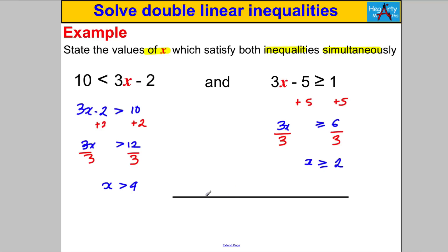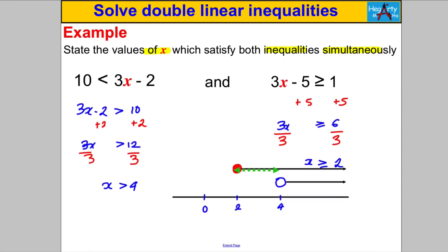Draw a number line with key points at 2 and 4. X > 4 has an open circle at 4 with an arrow right. X ≥ 2 has a filled circle at 2 with an arrow right. The first inequality is true on its own between 2 and 4, but both are true simultaneously only for X strictly bigger than 4. That's the answer — thanks for watching.